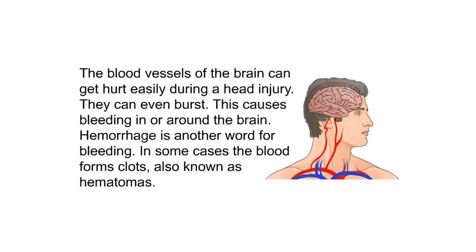The blood vessels of the brain can get hurt easily during a head injury — they can even burst. This causes bleeding in or around the brain. Hemorrhage is another word for bleeding. In some cases, the blood forms clots, also known as hematomas.